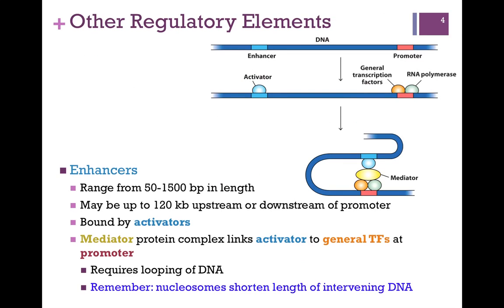Even in bacterial systems, there are other elements to regulate transcription — we'll look at one example of that in the next lesson. In this lesson, we're looking specifically at eukaryotic promoter elements. Here we have the promoter highlighted in red, the general transcription factors in orange, and RNA polymerase in green, binding to that promoter element.